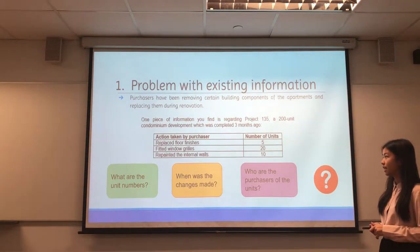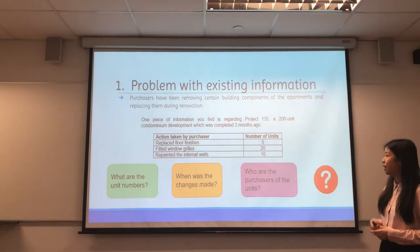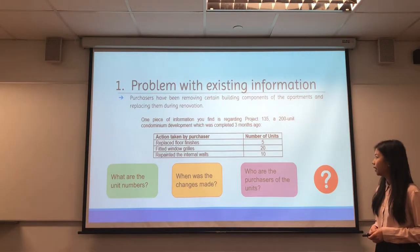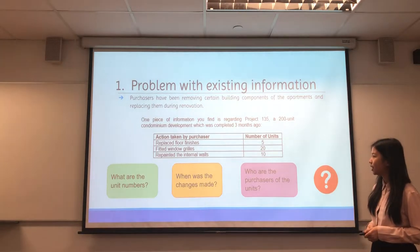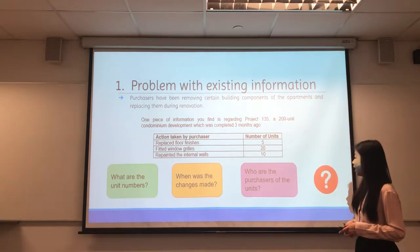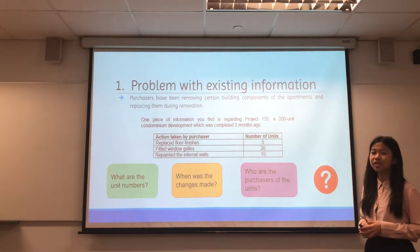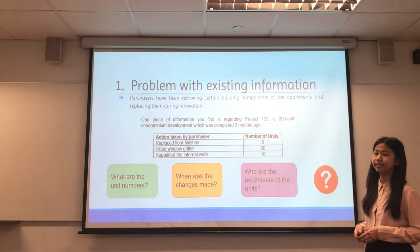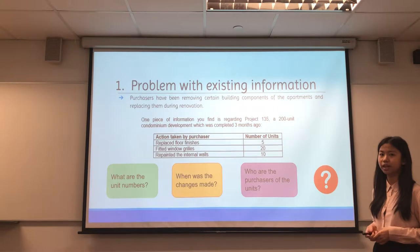The second piece of information given is that purchasers have been removing the building components of the apartments and replacing them during their renovation. This information only mentions what actions were taken by the purchasers and the number of units where those actions were taken, as well as the number of units where purchasers made changes to their apartments.